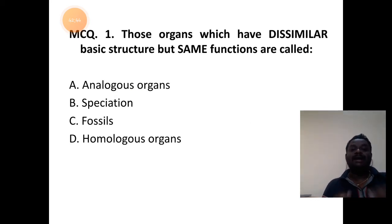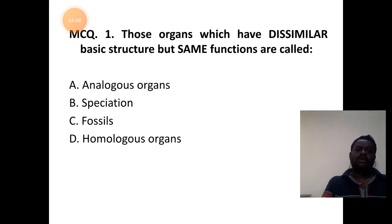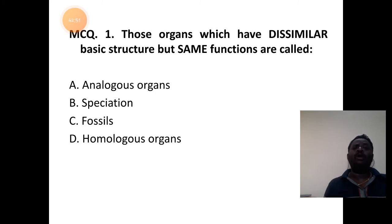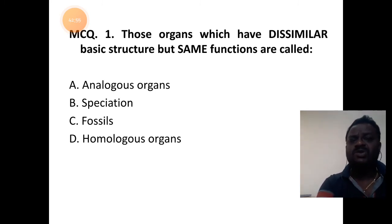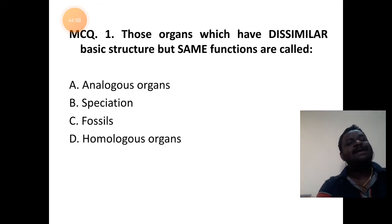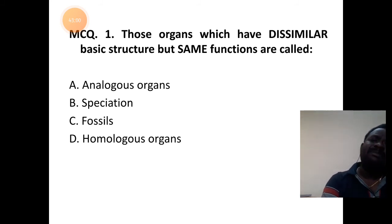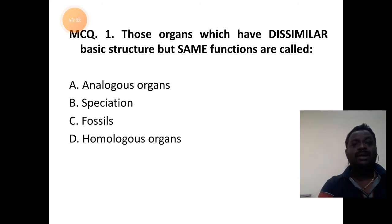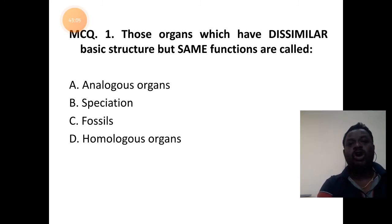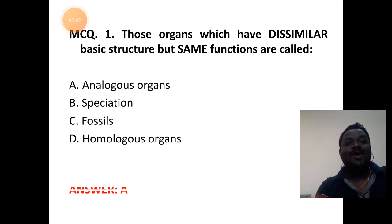After understanding the analogous organs of both sections, we shall now try to answer MCQ questions related to this topic. Those organs which have dissimilar basic structure but same functions are called analogous organs.